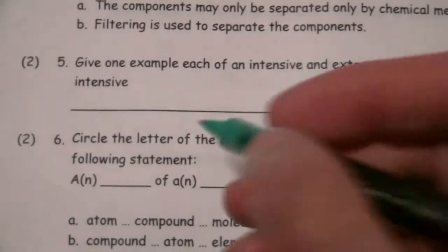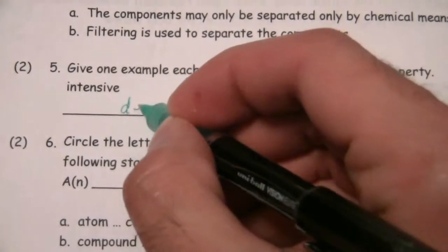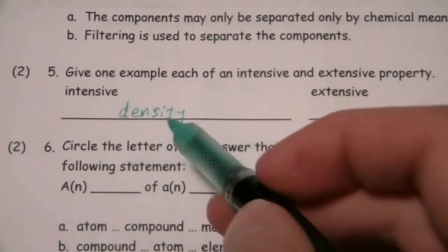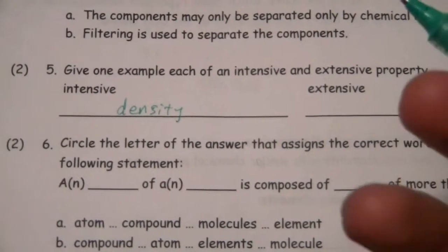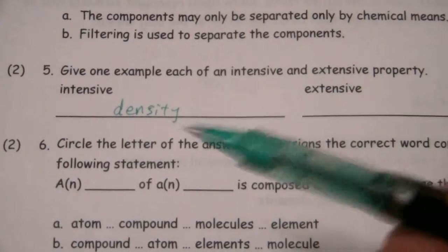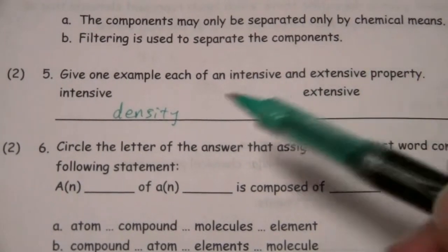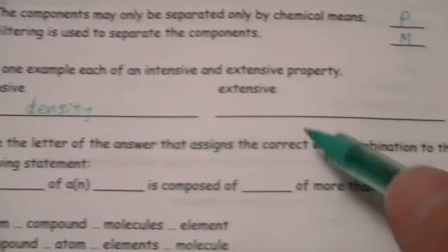So I mean, there are any number of possible answers for this, but I'm going to say density. We looked at the example of mercury in class. The density of mercury is the same regardless of what sample of mercury you have. Its mass divided by its volume is always going to be the same.